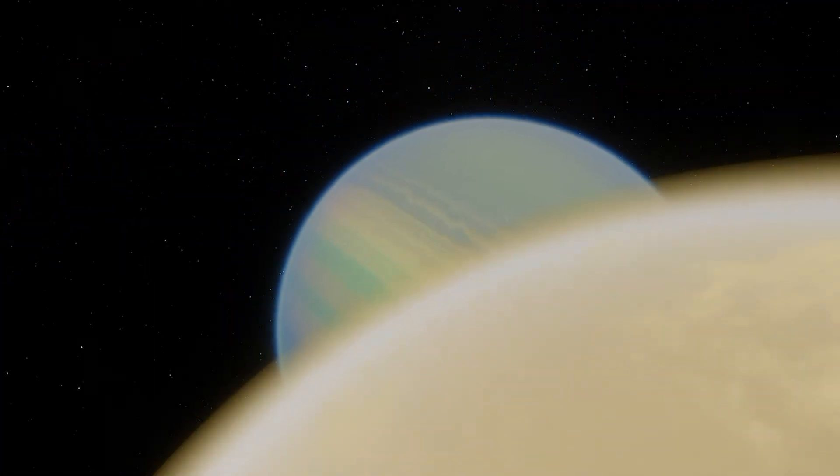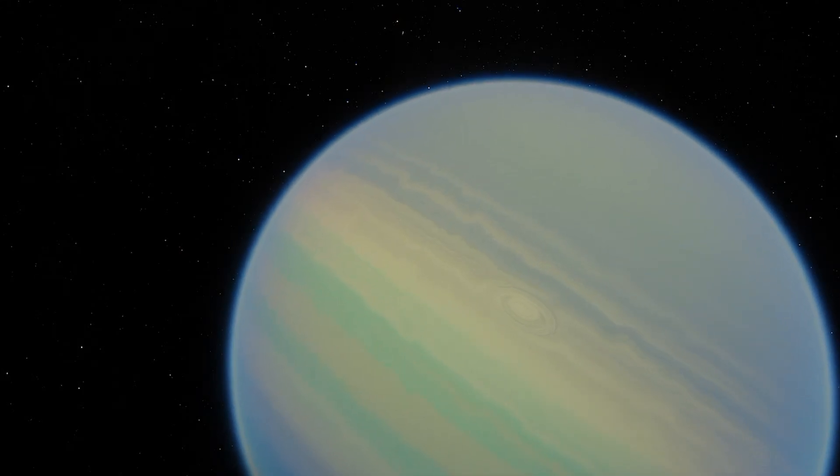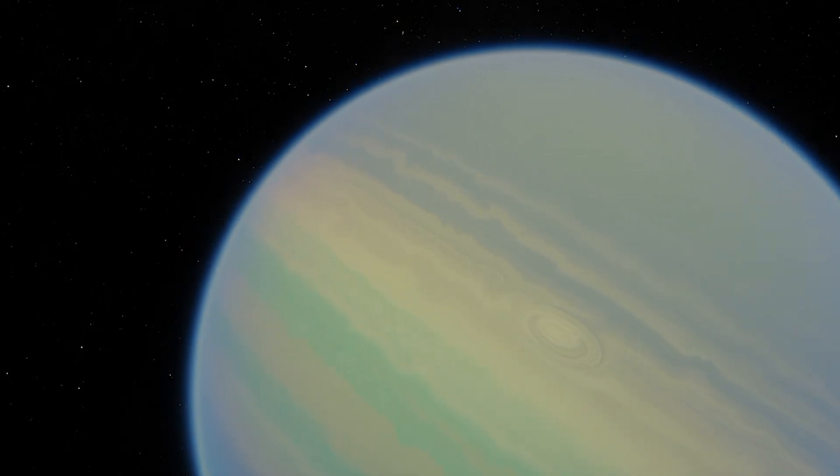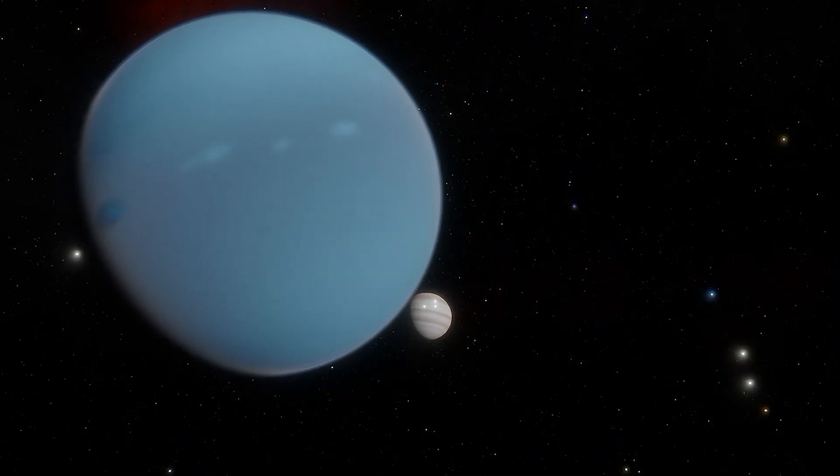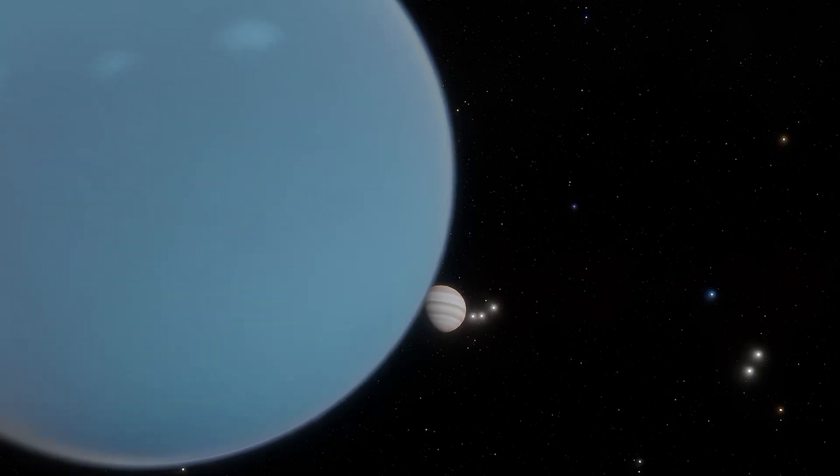If these planets formed ex situ, migrating to their current locations later, they may contain large quantities of frozen volatiles and amorphous ices. Otherwise, if they formed in situ, their inventory of heavy elements should be made entirely of refractory materials.